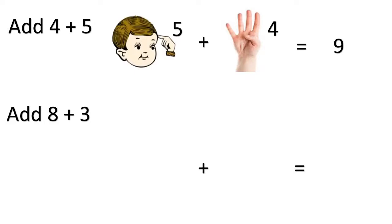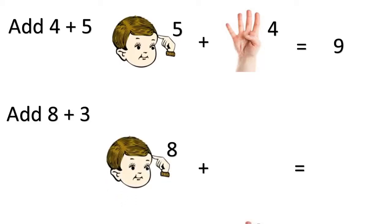We will try one more number. We have to add eight plus three. Which is the bigger number? Yes, it is eight. Let's keep eight in our mind and take out three fingers. After eight, it is nine, ten, and eleven. So eight plus three is eleven.